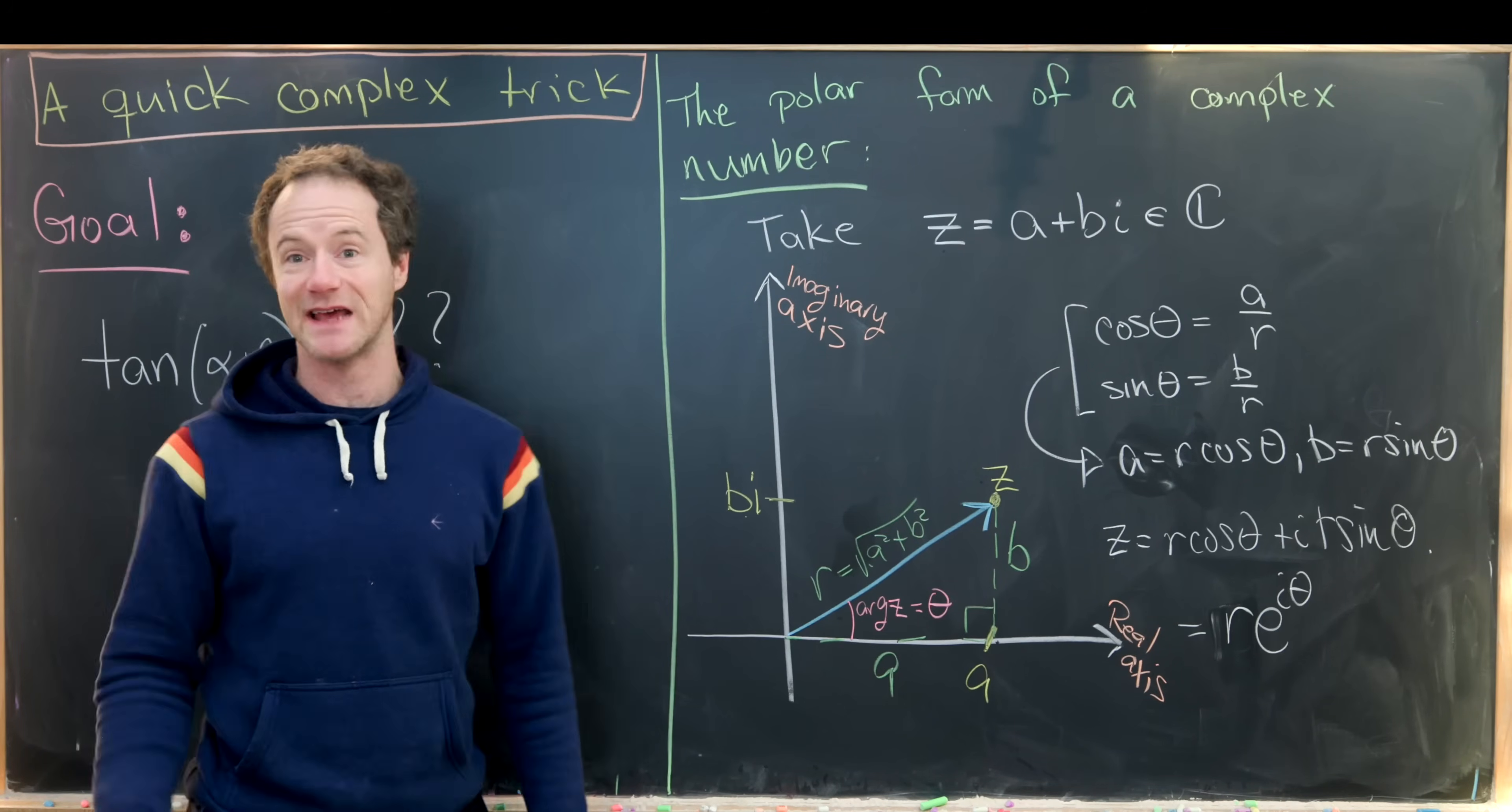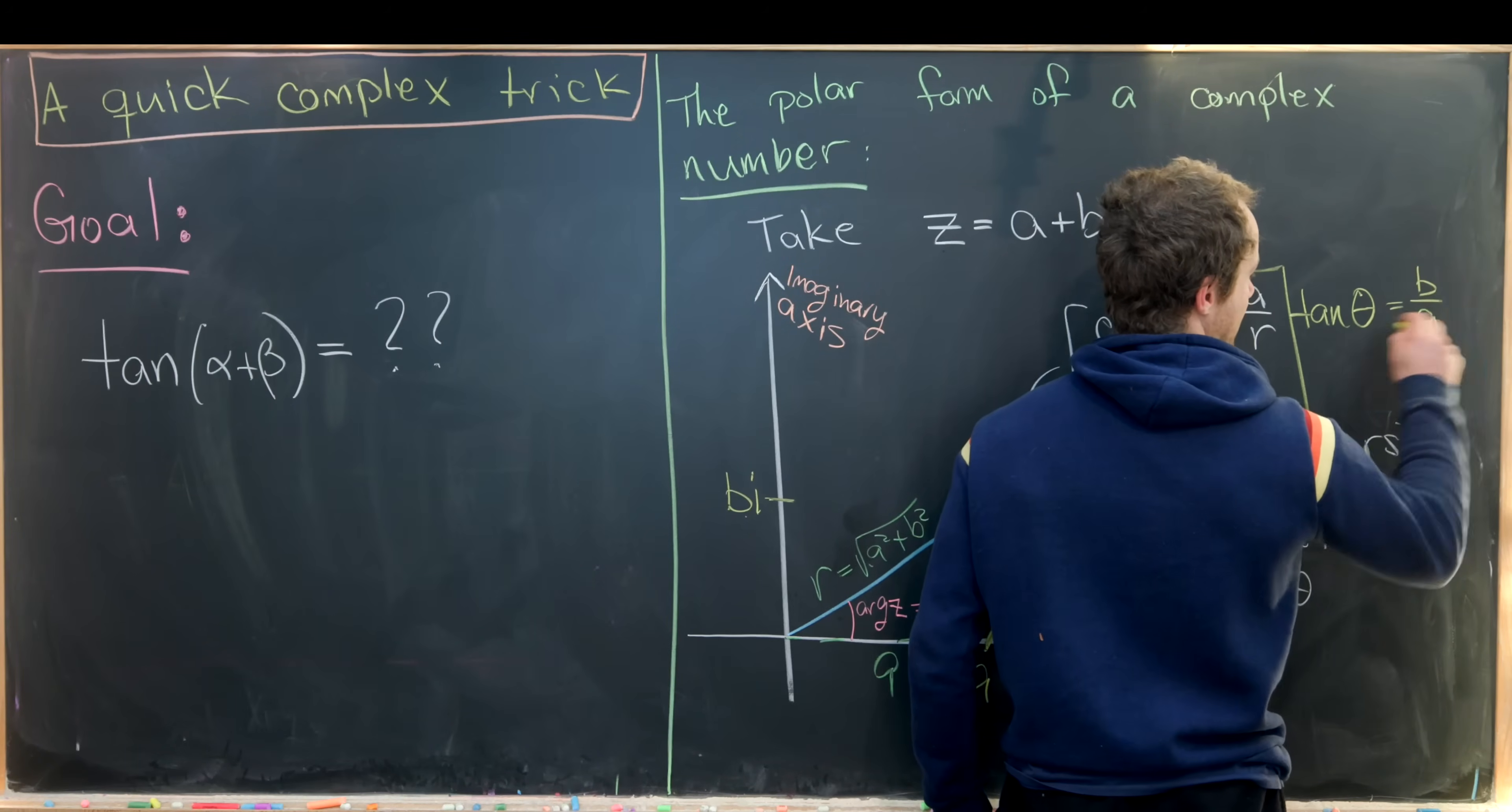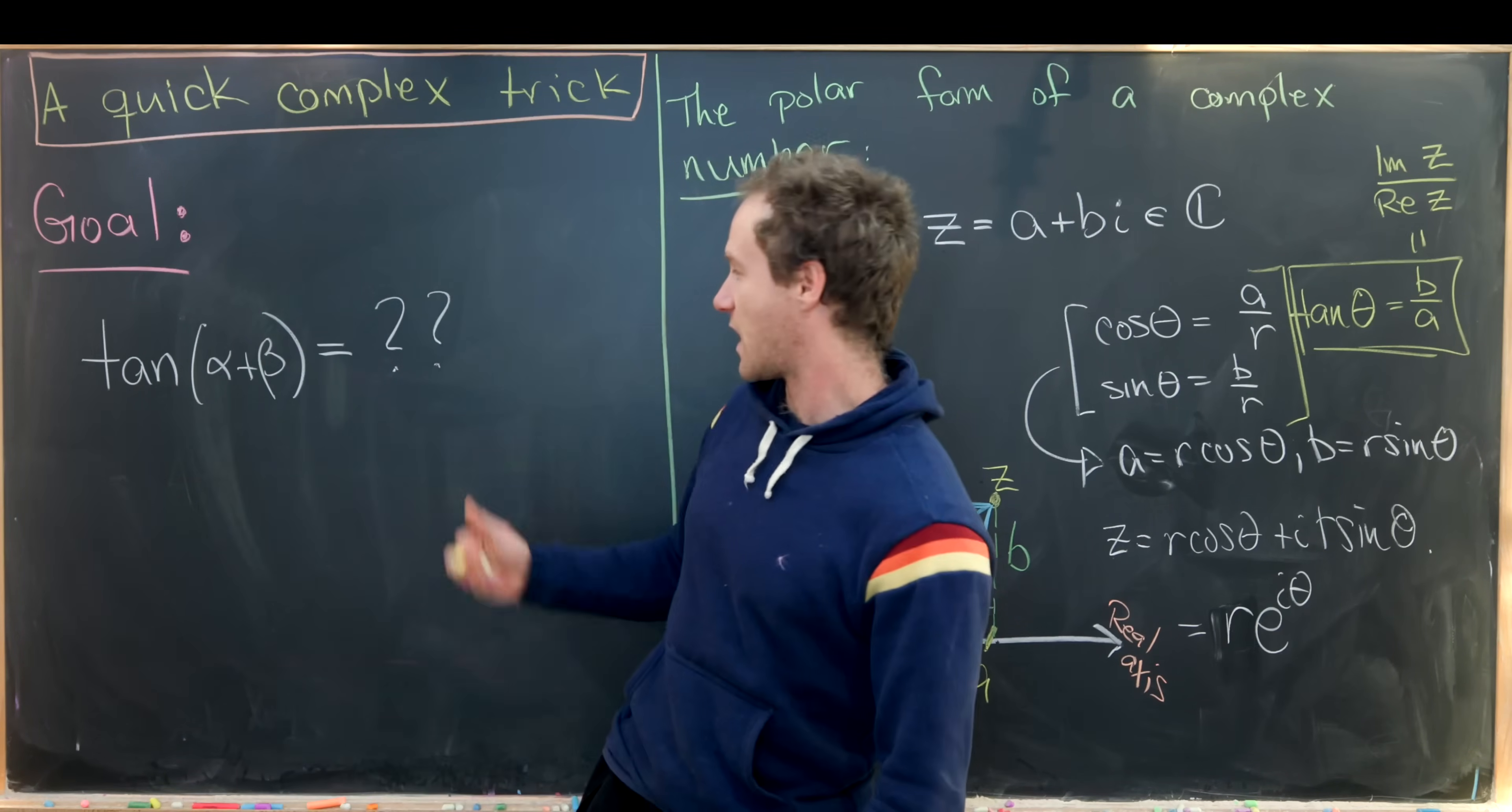Now before we move on and tackle our problem, there's one more thing that I want to notice. And that is I can calculate the tangent without ever calculating this value r, although it's not hard to calculate the value r. So notice tangent of theta, in other words sine over cosine, will simplify down to b over a. So in fact, it's really easy to find the tangent of the argument of a complex number given its rectangular form. It's really just equal to the imaginary part of z divided by the real part of z. And that's what we'll use as we derive this identity.